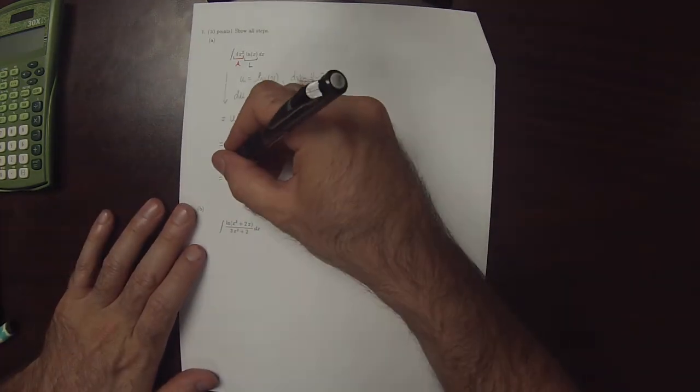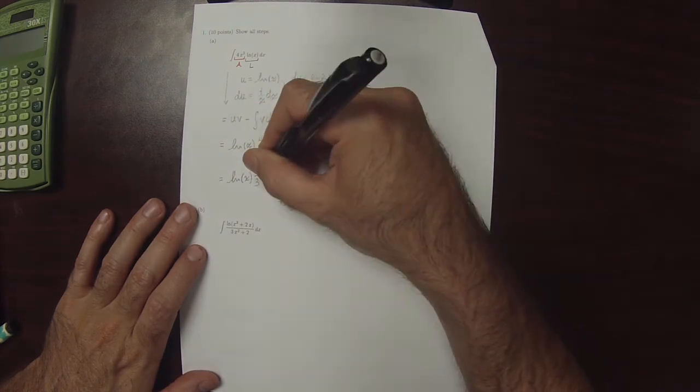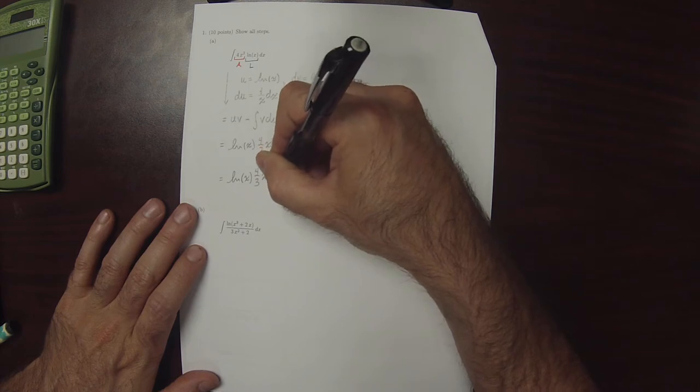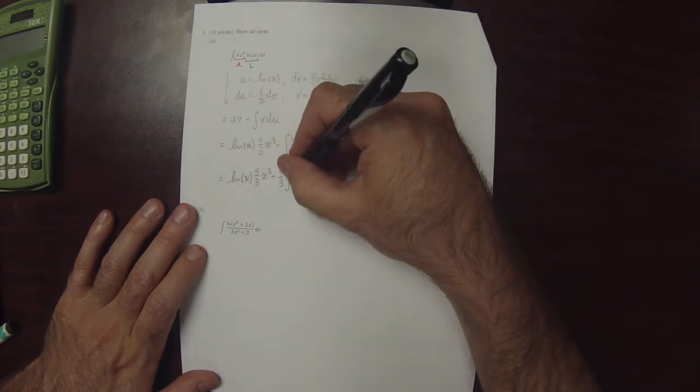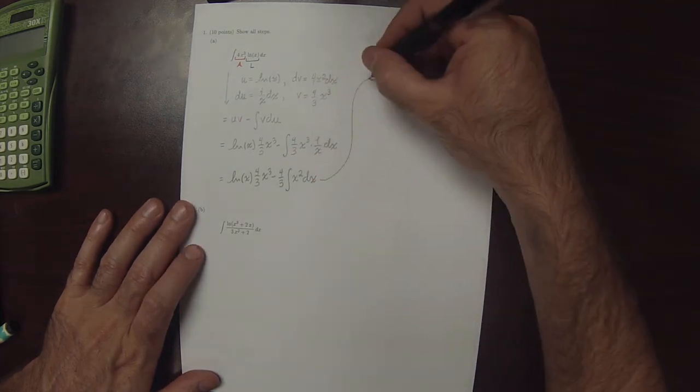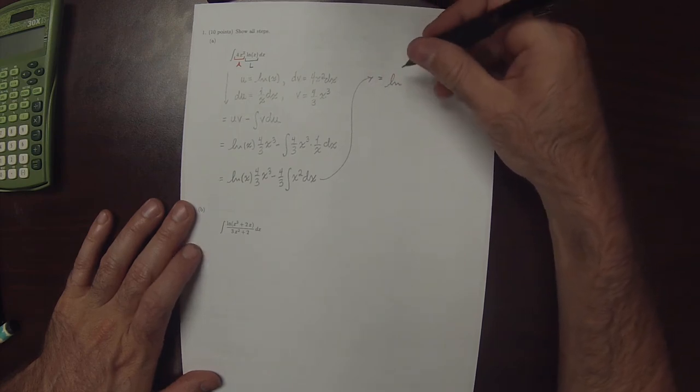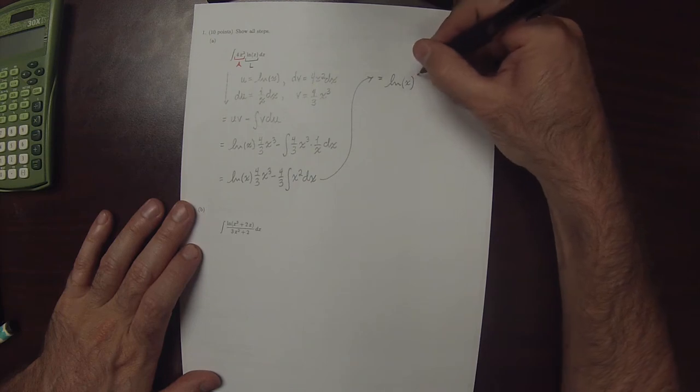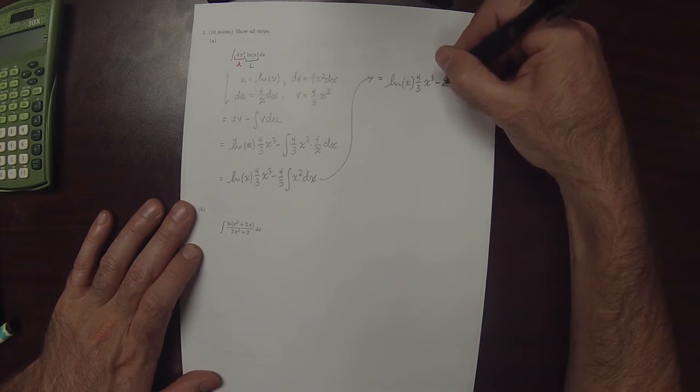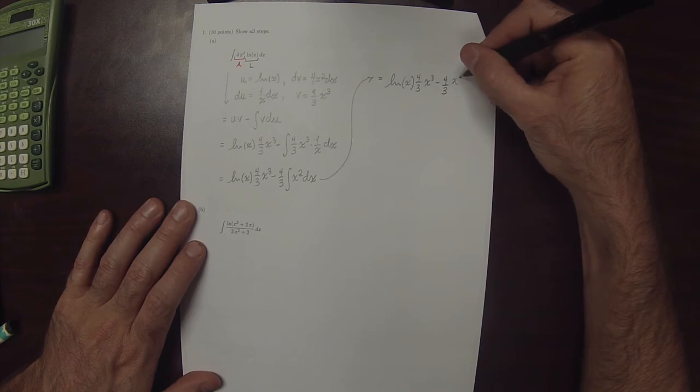So this is log x times 4 thirds x cubed minus 4 thirds antiderivative x squared dx. And so that's log of x times 4 thirds x cubed minus 4 thirds x cubed over 3 plus a constant.